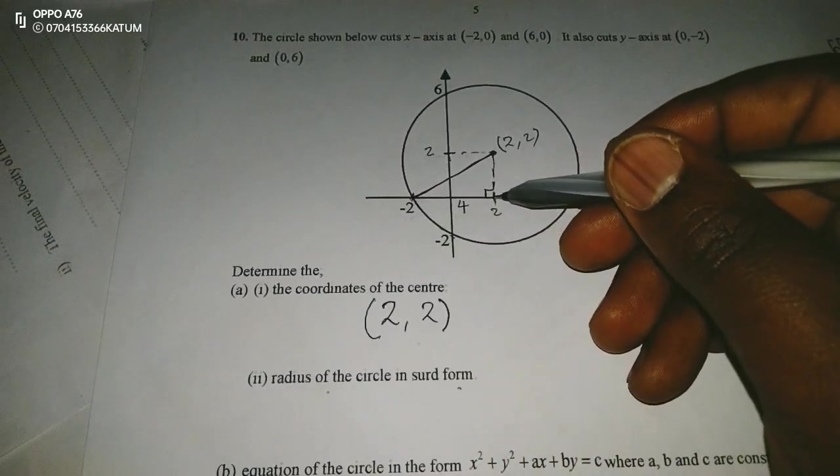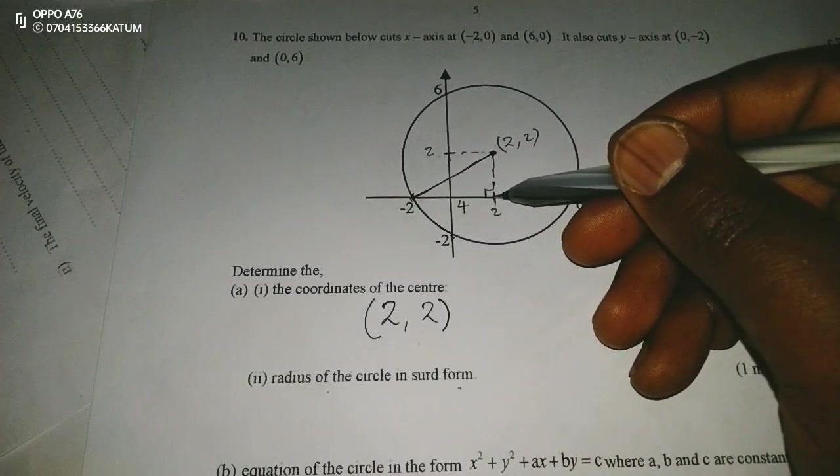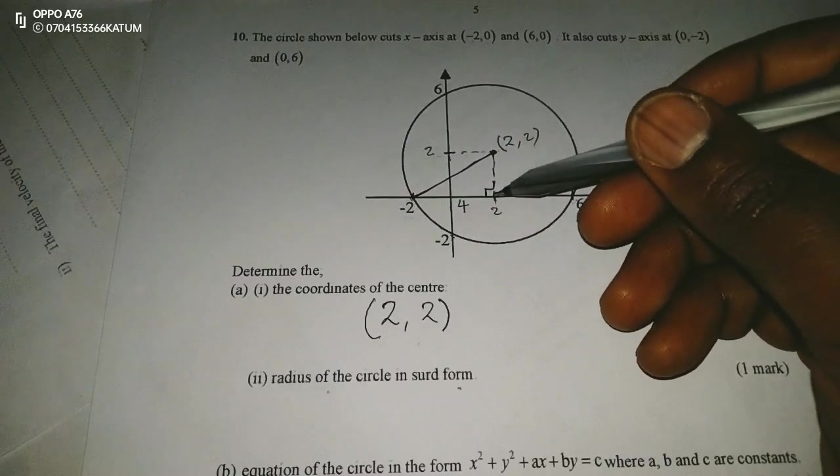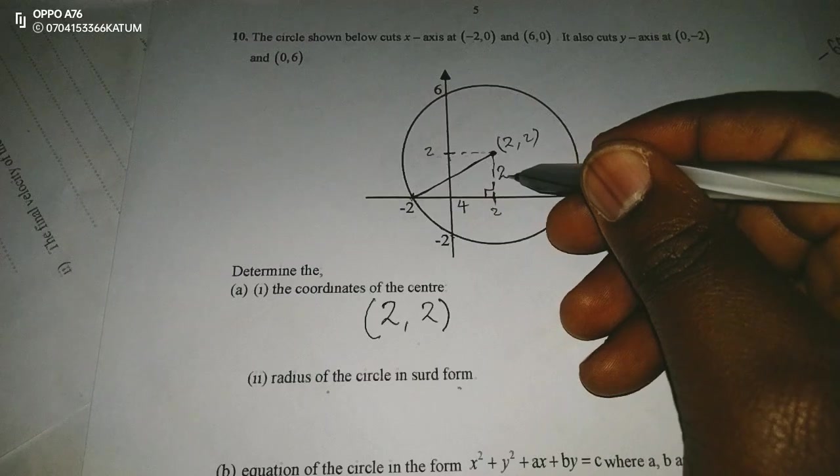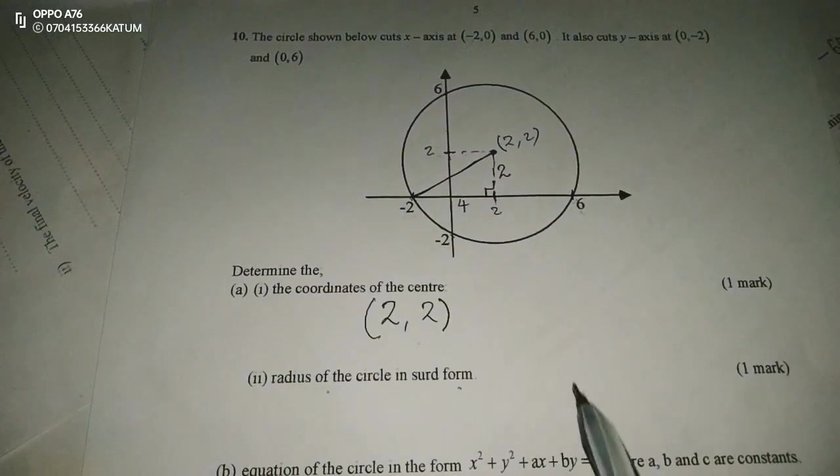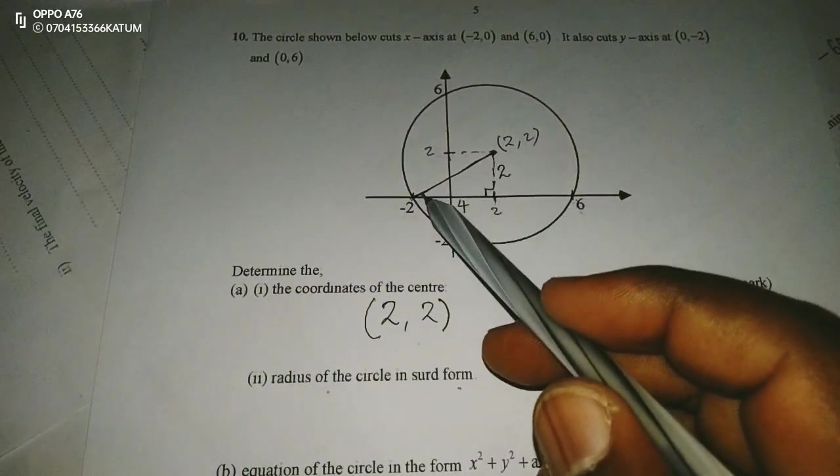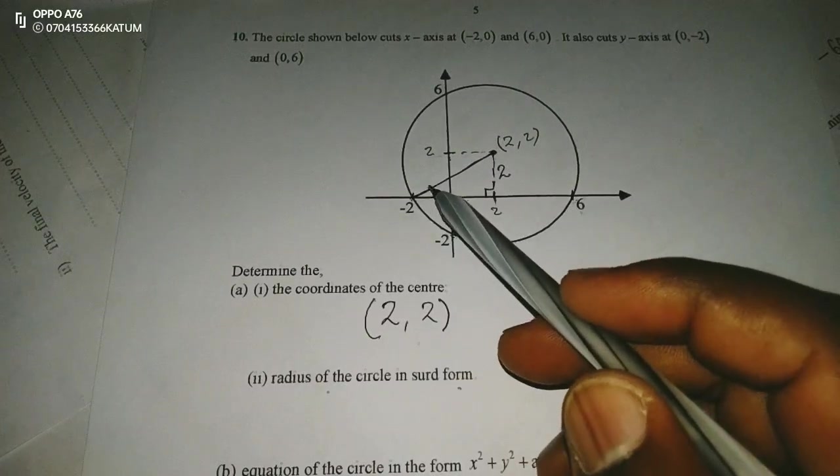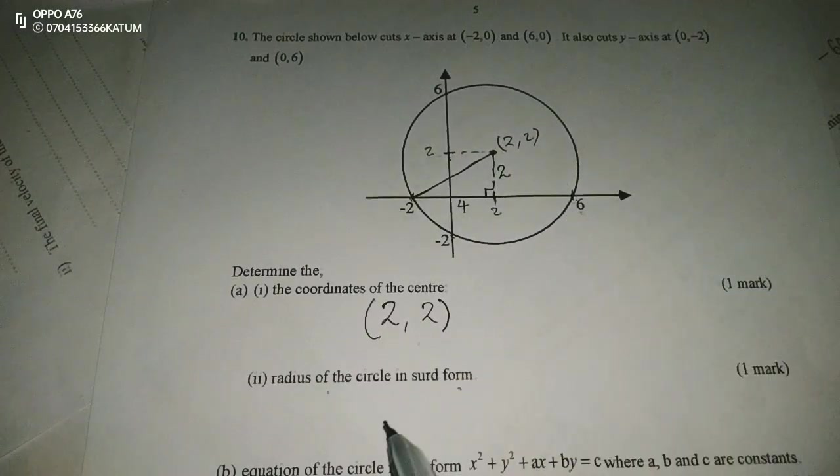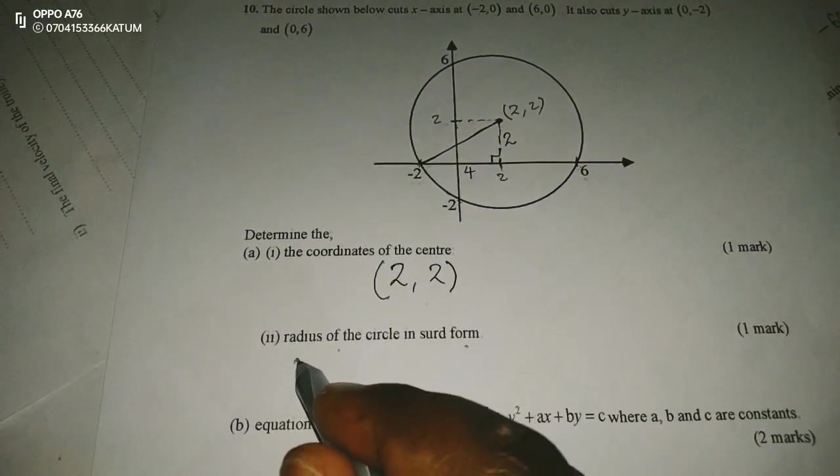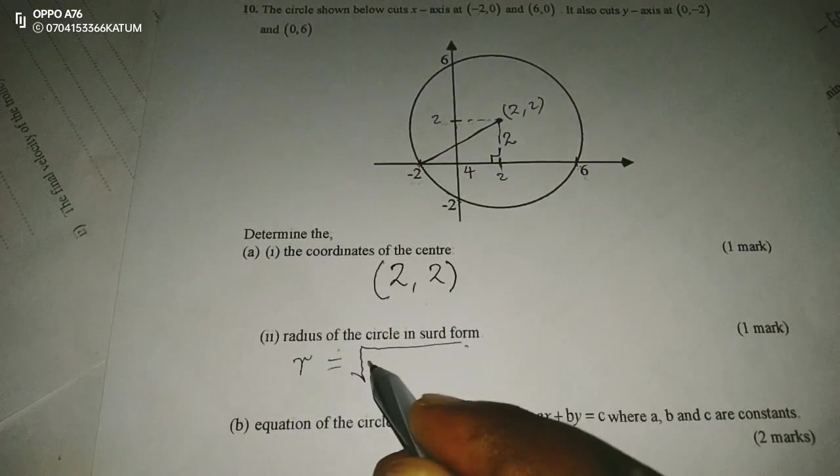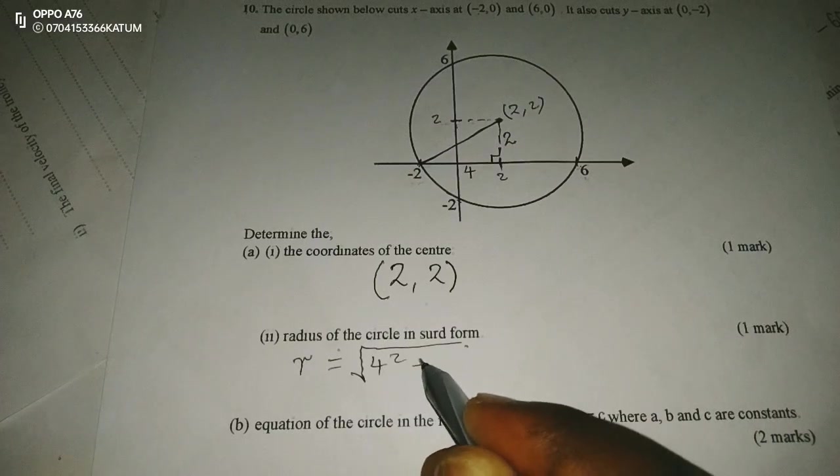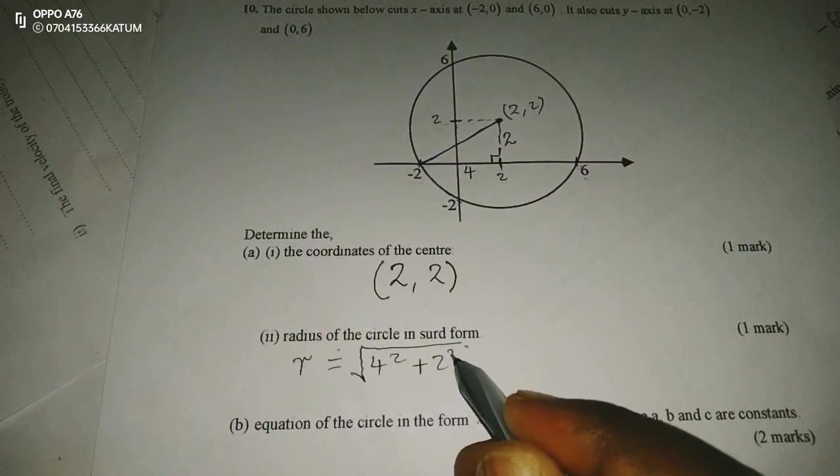From 0 to the center, we have 2 units here. Yes, we have 2 units there. Therefore, to get the radius, then we will need Pythagoras theorem, whereby the radius is going to be the square root of 4 squared plus 2 squared.